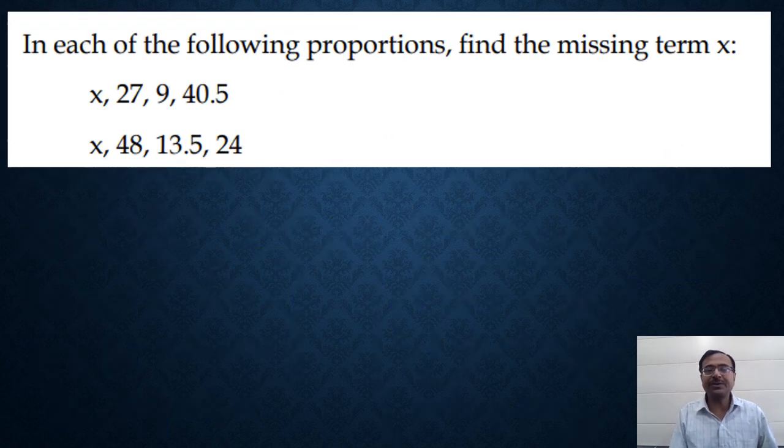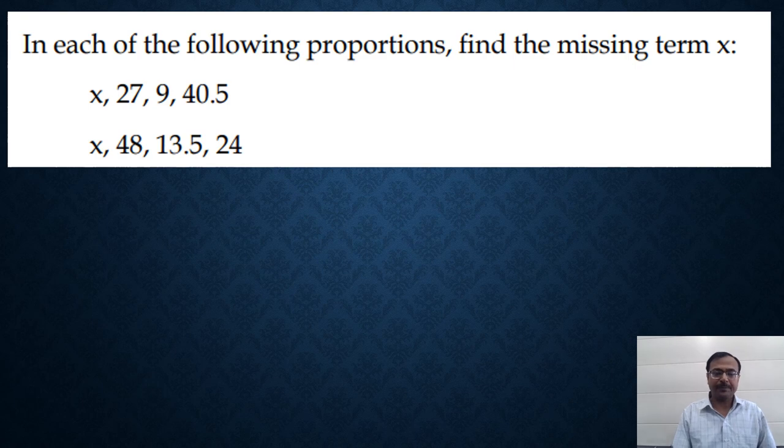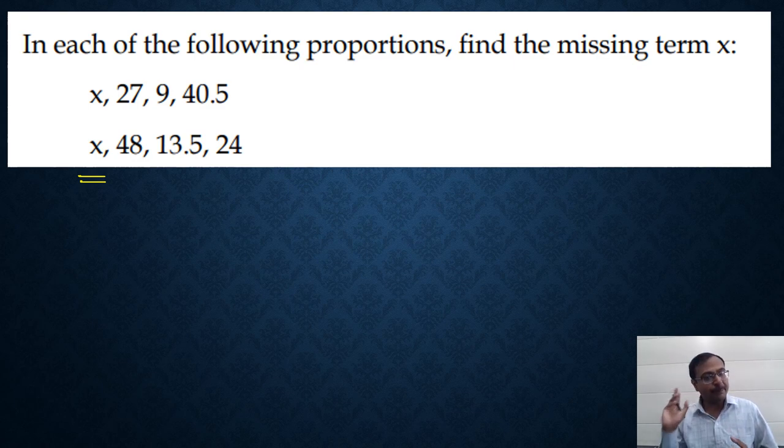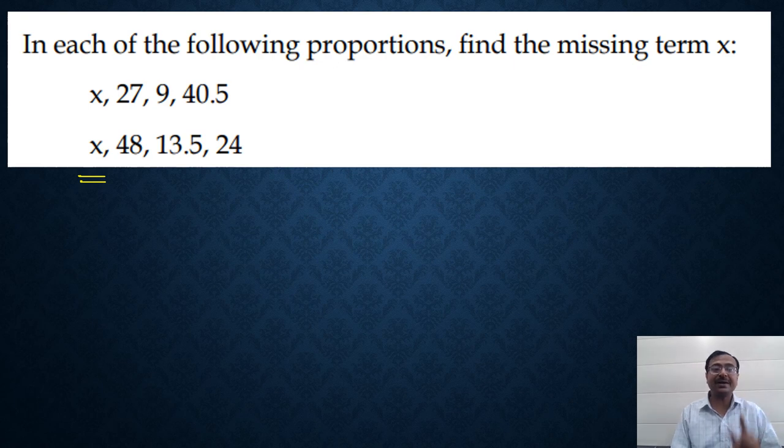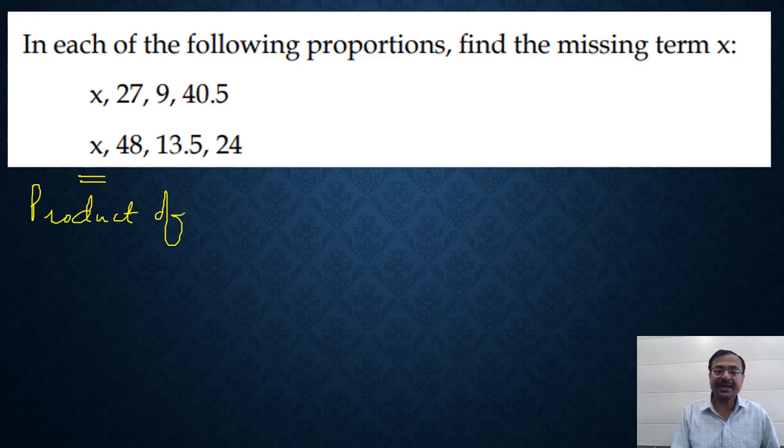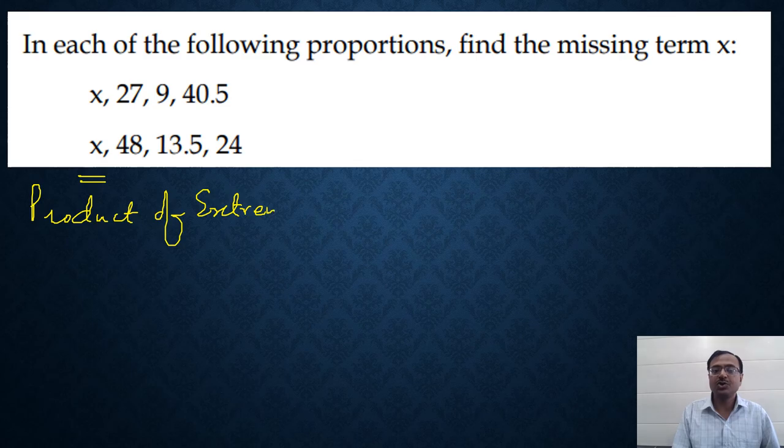This is another important question where the units are mentioned. Let's see this question. In each of the following proportions, find the missing term. Now, this missing term can be any one of the four terms. You have to find that missing term. You already know the rule now. The product of the extremes and the product of the means, they always have to be equal if it forms a proportion. Now, in this question, it is mentioned that it is a proportion. So if it is a proportion, then the product of extremes should be equal to the product of means.